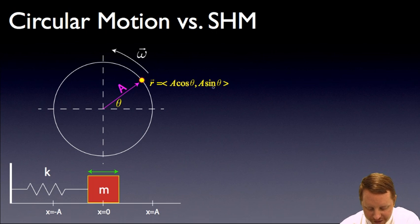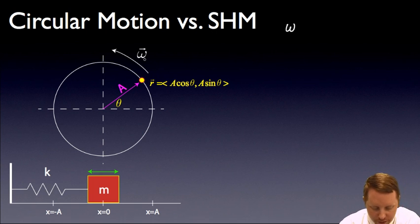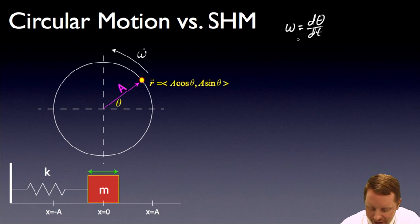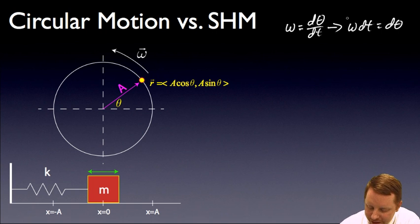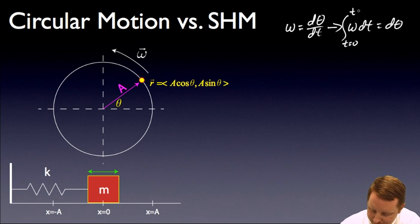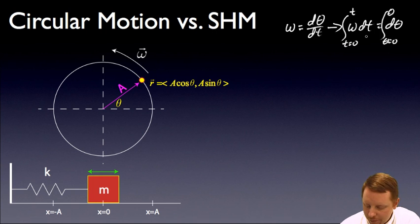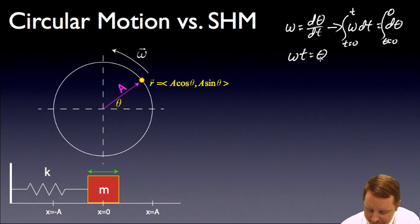Since r equals a cosine theta and a sine theta, we know that angular frequency omega is the derivative of theta with respect to time. We can separate variables to say omega dt equals d theta. Integrating both sides — from t equals zero to t, and from theta equals zero to theta — since omega is constant it crosses the integral sign, and we end up with theta equals omega t. That's going to be useful in a moment.